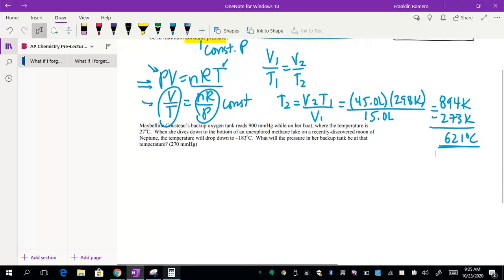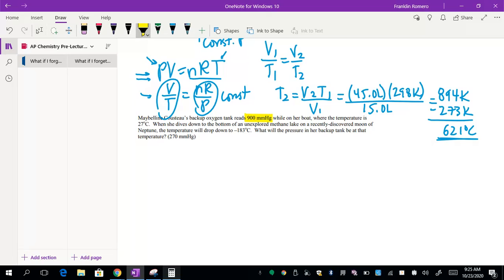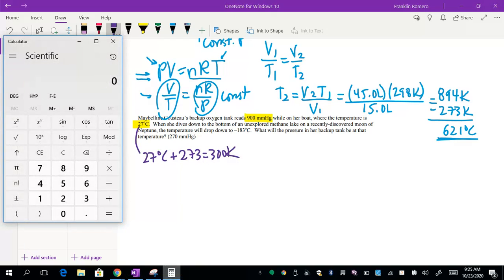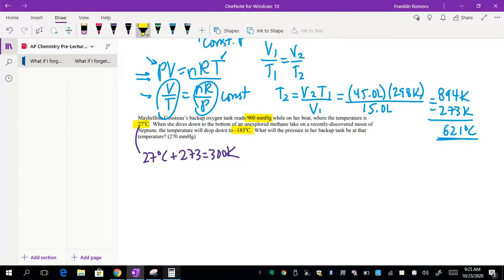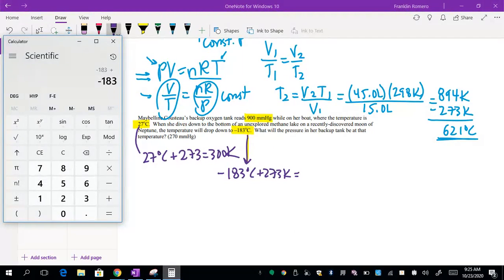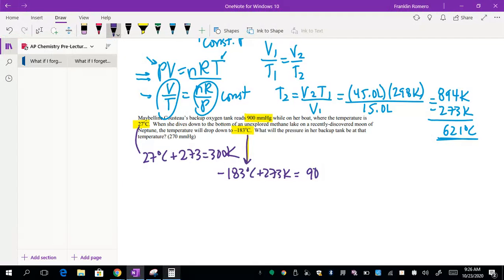Let's try one more example. I have an oxygen tank that reads 900 millimeters mercury when the temperature is 27 degrees Celsius. Since we're going to need this in Kelvin, let's do that conversion. So 27 degrees Celsius plus 273, I believe that's 300 Kelvin. Then the temperature is going to drop to negative 183 degrees Celsius, so I'm going to convert that to Kelvin as well. That's negative 183 degrees Celsius plus 273, that comes out to 90 Kelvin. So a T1 and a T2.